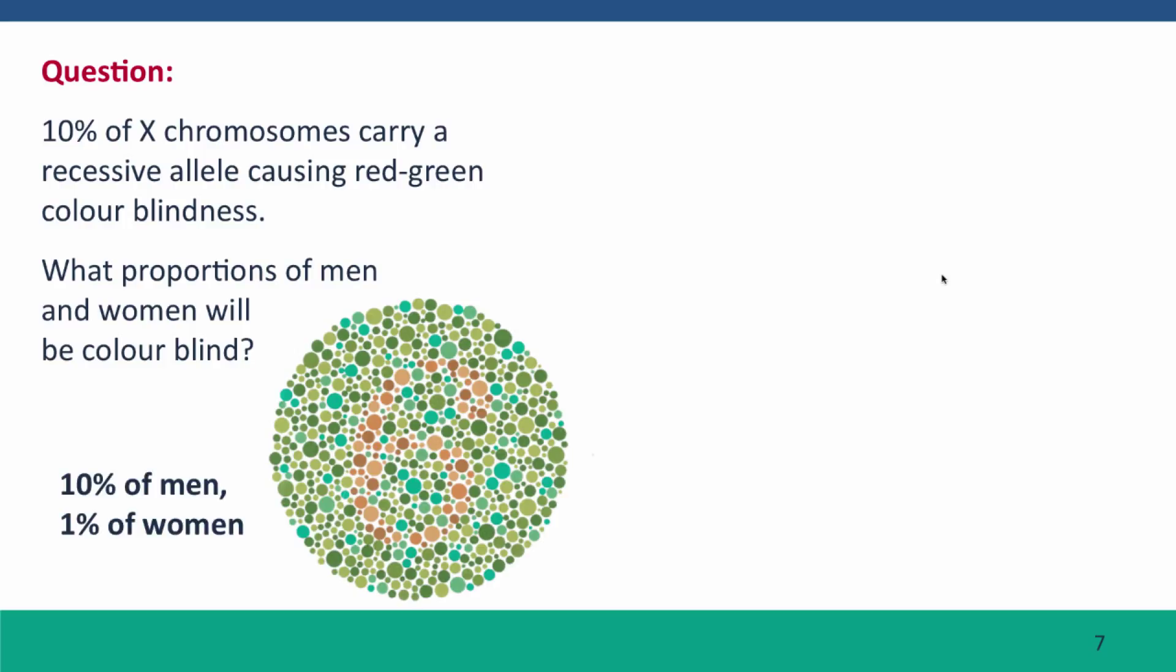Well, if you think about a man with an X chromosome, he has a single X chromosome, and let's assume that that X chromosome, represented by this line, is drawn at random from the population of X chromosomes in the community.